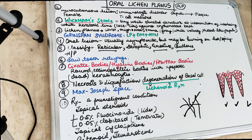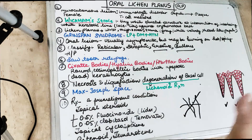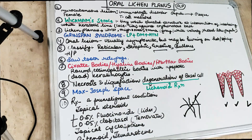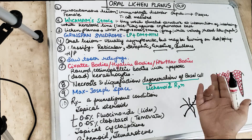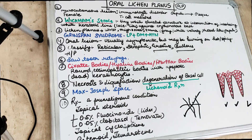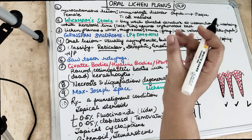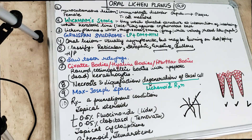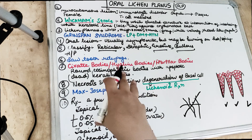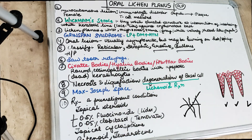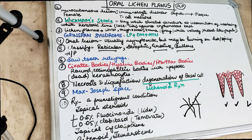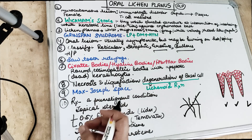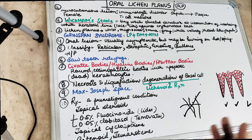The most important histological feature is necrosis and liquefaction degeneration of the basal layer of the epithelium, caused by the T-cell mediated immunological reaction. Due to this liquefaction degeneration, the epithelium becomes thin and spinous, and sometimes comes into direct contact with the connective tissue.